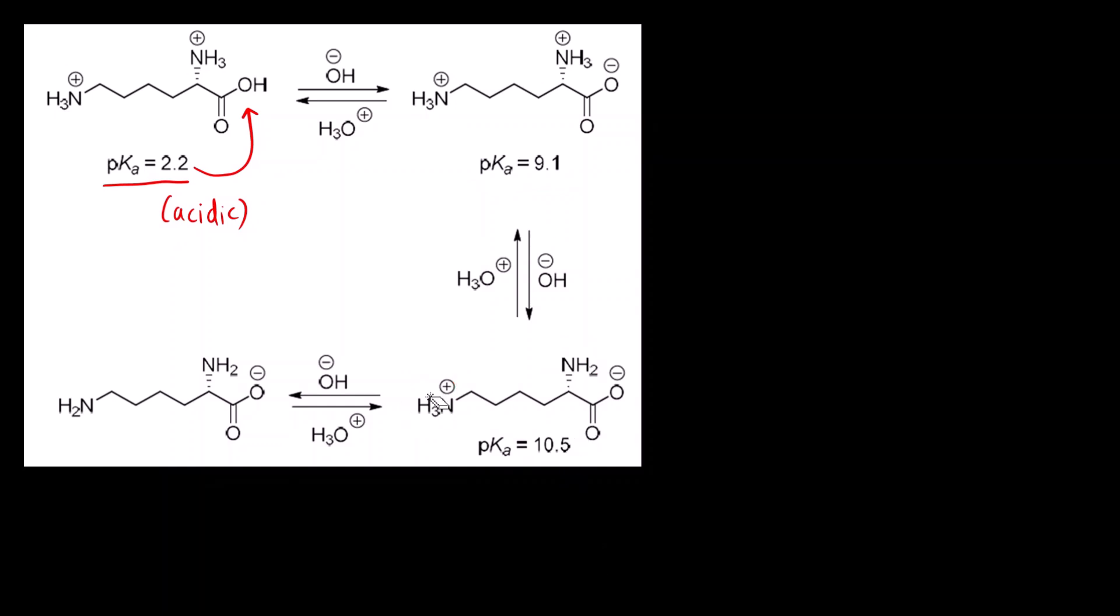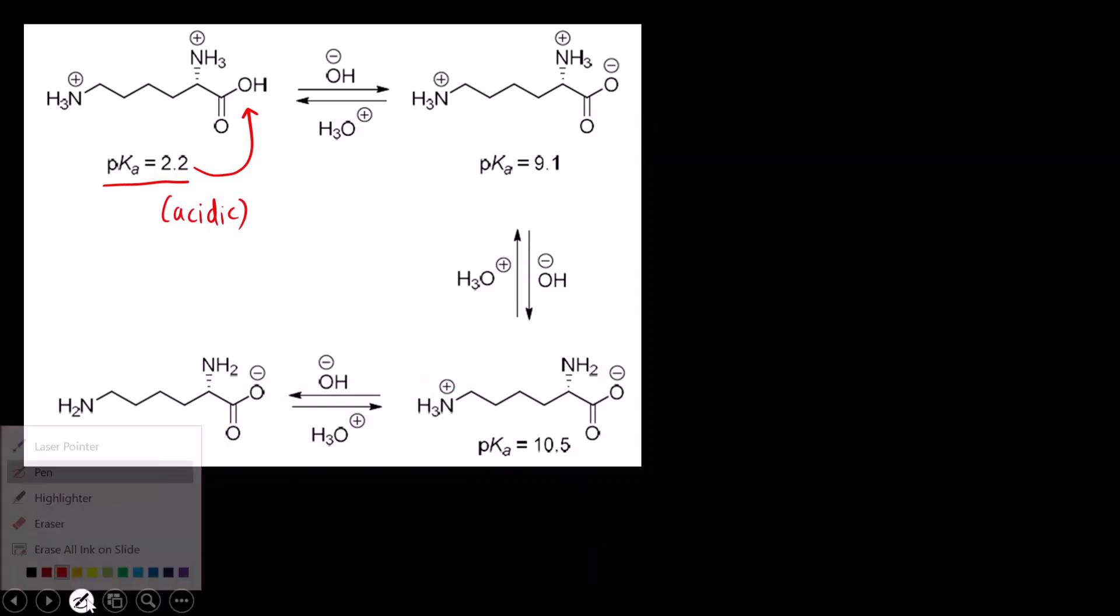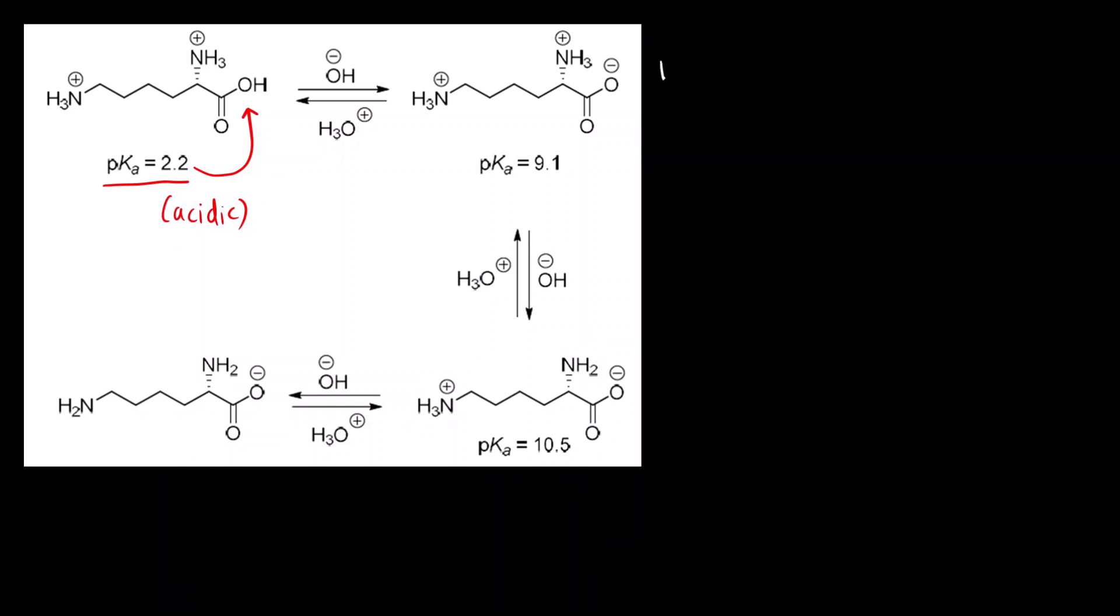What are the steps for finding or calculating the isoelectric point? First is identify whether an amino acid is acidic, basic or neutral. We know because for all these three types of amino acids the formulas used are different for calculation of isoelectric point.